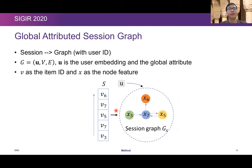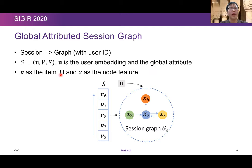We first discuss how to convert a session into a global attributed session graph. We want to convert a simple session into a graph with user information. The graph includes U, V, and E. U is the user embedding and global attributes, V indicates the node set, and E indicates the edge set. A small V indicates an item ID and X is the corresponding node feature. For example, V3 is followed by V7, so there is an edge between X3 and X7 in the session graph.